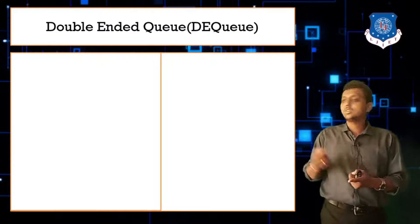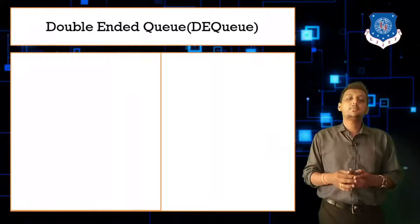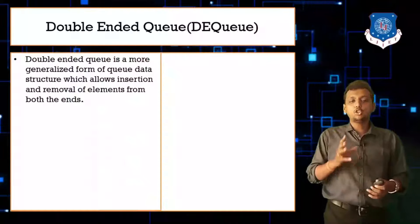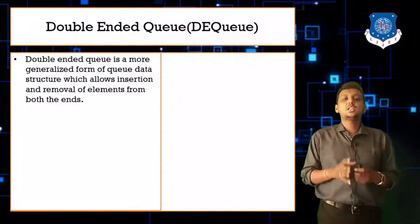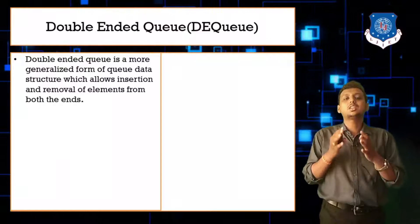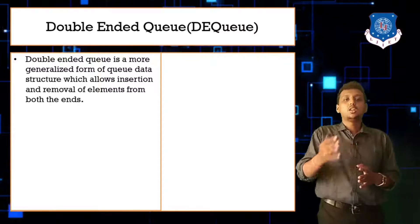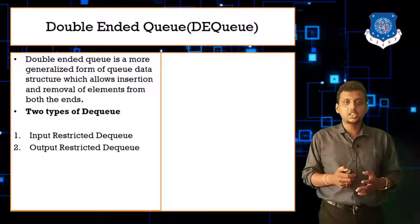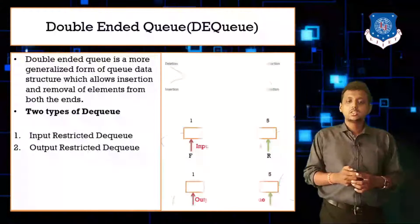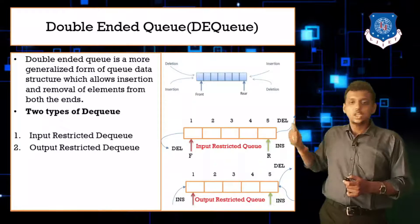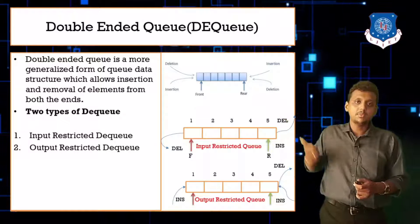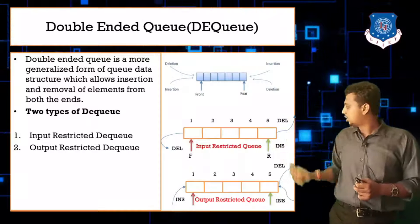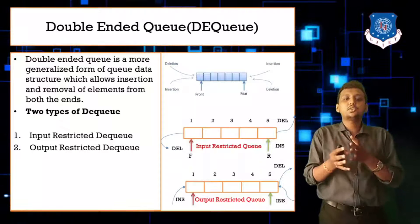That concept is known as DEQ. DEQ is further divided into two different parts: one is input restricted DEQ and the second one is output restricted DEQ. DEQ is a more generalized form of the queue data structure which allows the insertion or removal of an element from both ends.